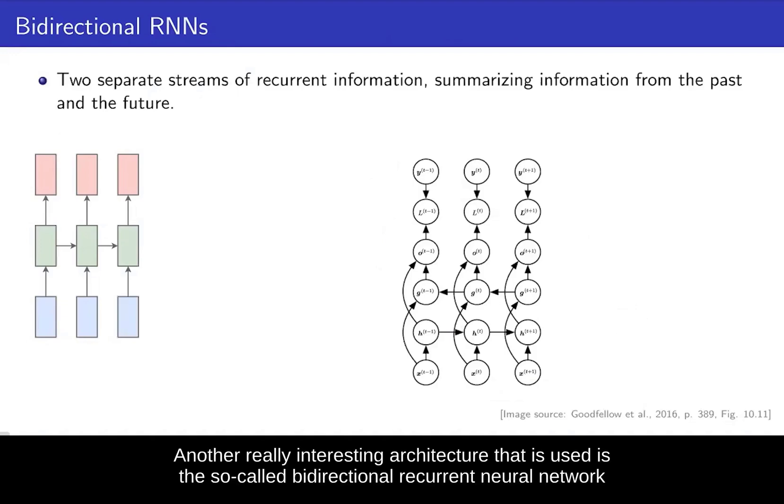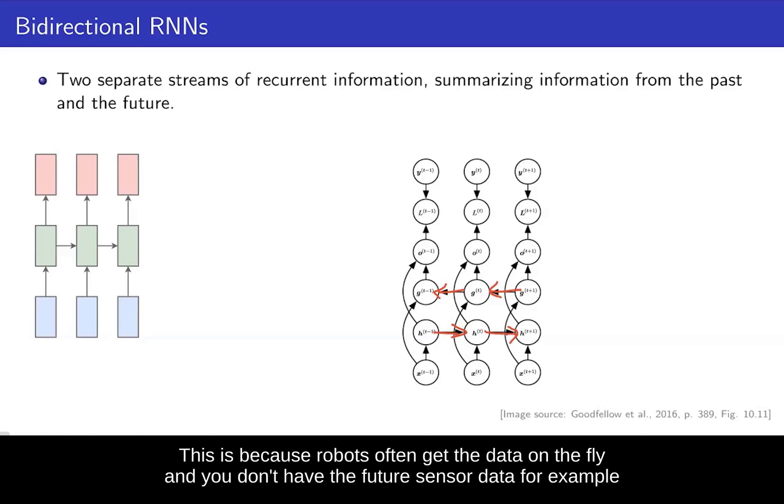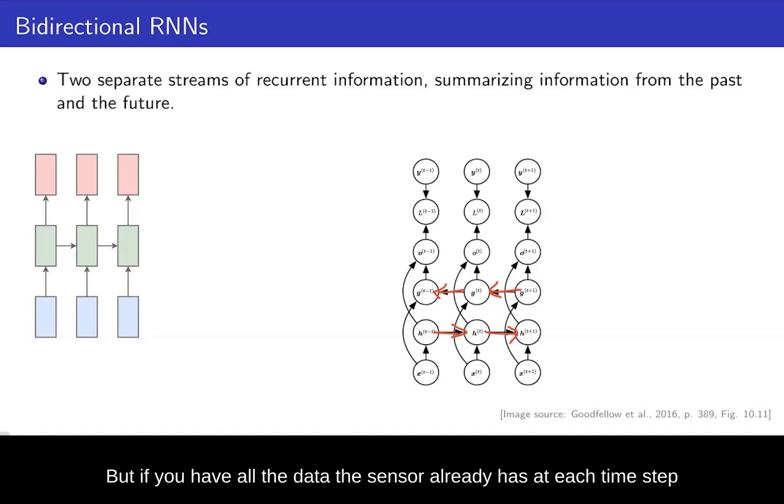Another really interesting architecture that is used is the so-called bidirectional recurrent neural network. Here you have two streams of recurrence, one that flows from the future to the past, and another one here that flows from the past to the future. This, of course, cannot be used for online applications, such as in the case of robotics, because robots often get the data on the fly and you don't have the future sensor data. But if you have all the data the sensor already has at each time step, then you want to make the predictions using all the data that you have. So this is the model that can be used to summarize the data from the past and from what will come next in the future.